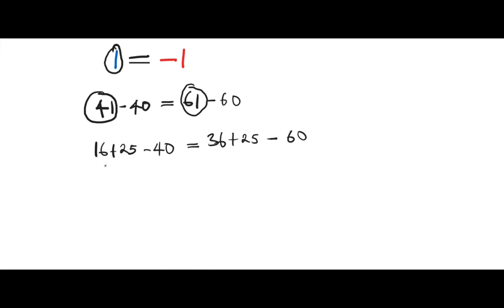Now 16 on its own is 4 squared and 25 on its own is 5 squared. So we have 4 squared plus 5 squared minus 40 equals to 6 squared plus 5 squared minus 60.